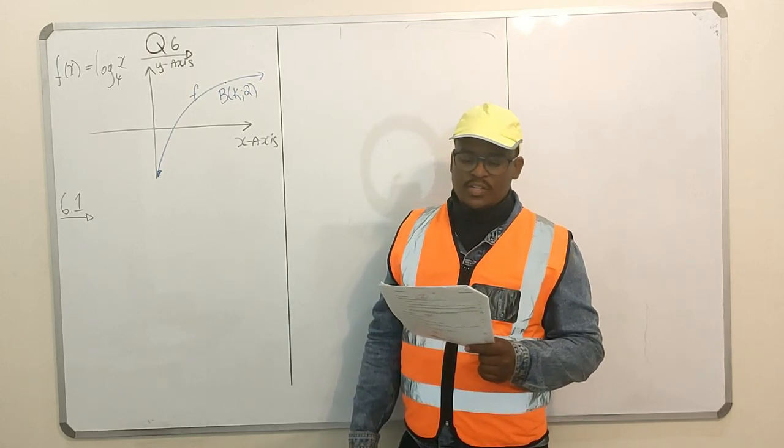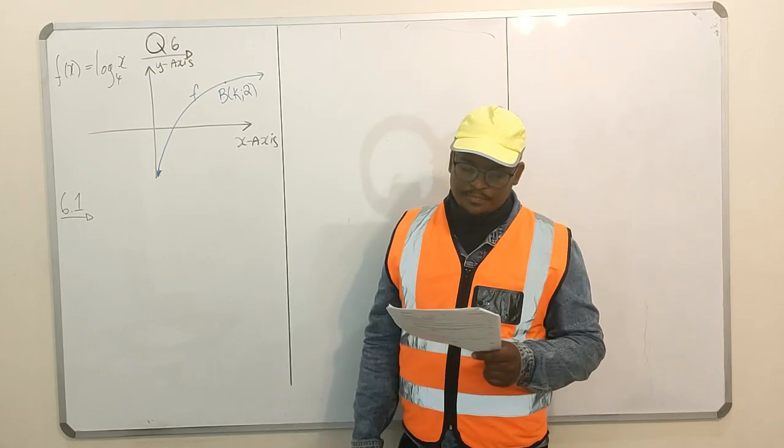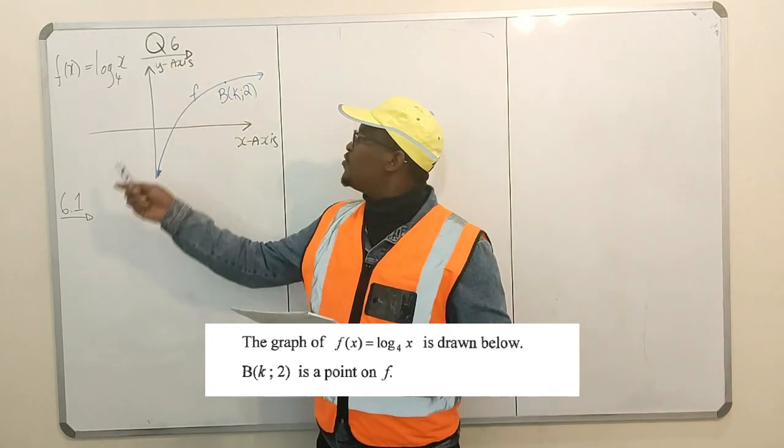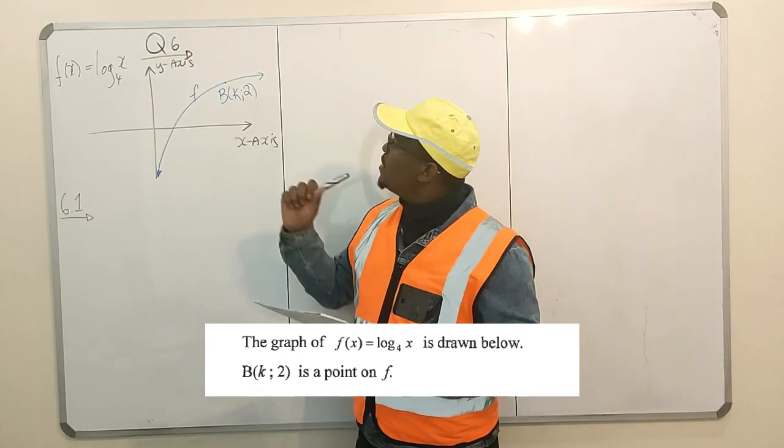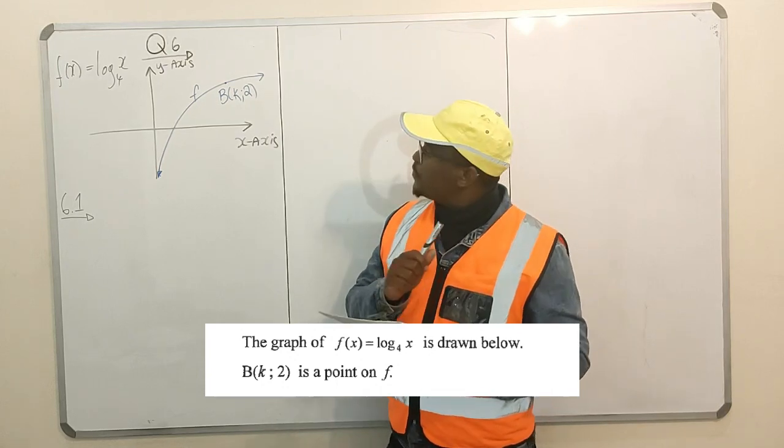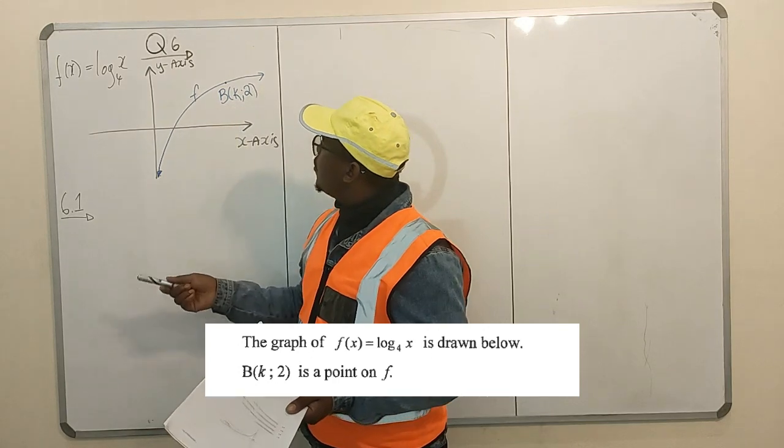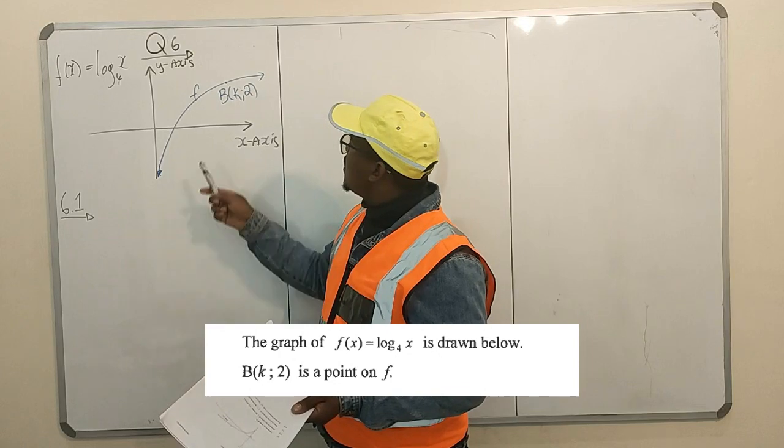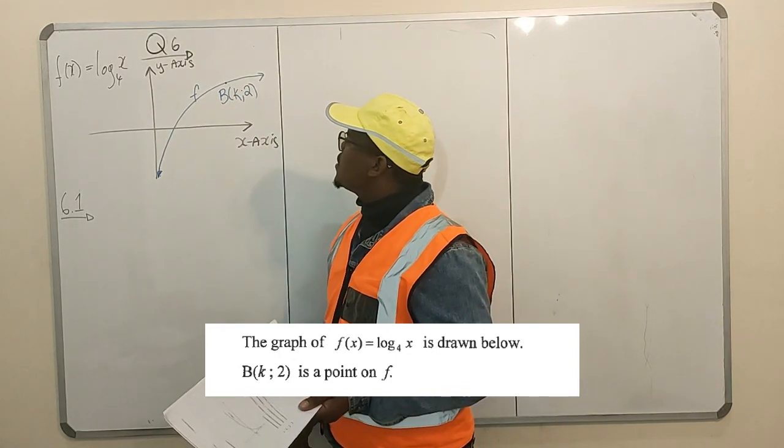I'm going to read question 6 statement and then proceed to answer the question that follows. The graph of f(x) is drawn below. Here's our graph f(x). Point B is a point on f, and we're given a point B to be on f. Then, question afterwards.